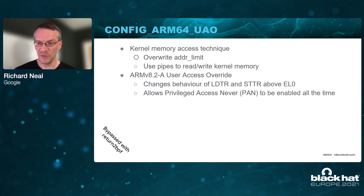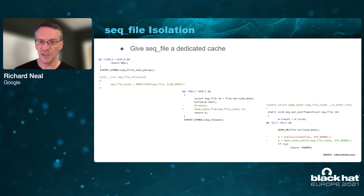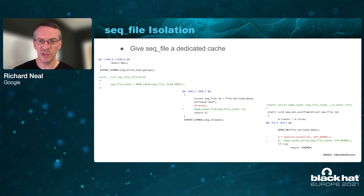This can be worked around using the return-to-BPF technique described earlier. Address limit protection has also changed in more recent Linux versions, resulting in the removal of this configuration option. The sequence file structure was used in the exploit: overlapping eventfd context and sequence file allowed Xingyu to use the sequence_operations member as the eventfd count member to leak kernel memory addresses. Later, overwriting sequence operations was used to demonstrate control of the instruction pointer. Sequence file has been used in many Linux kernel exploits; moving it into a dedicated cache would make these techniques stop working.